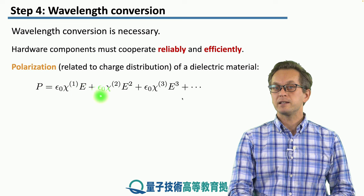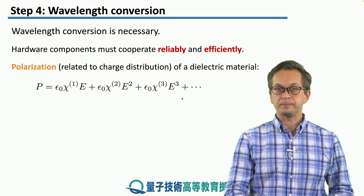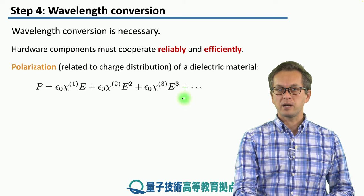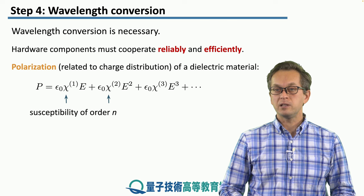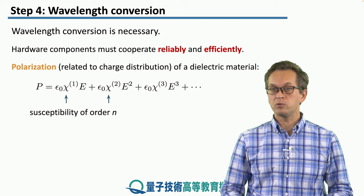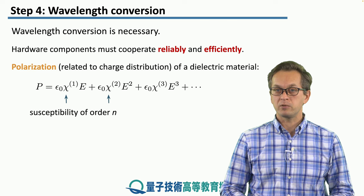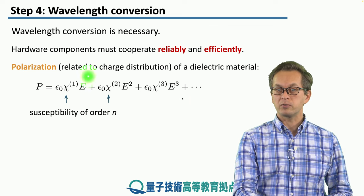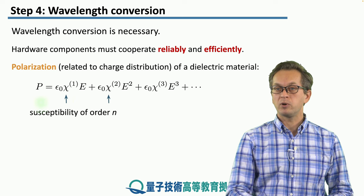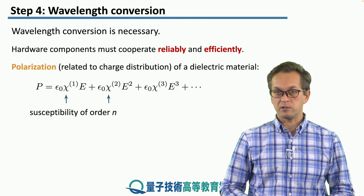The polarization P is a function of the electric field strength and these chi1, chi2, chi3 functions. They are called susceptibility of order 1, of order 2, of order 3, and they tell us how strong a particular process is. For example, chi1 characterizes the strength of the linear process — how strongly the polarization responds to the first order of the electric field strength.